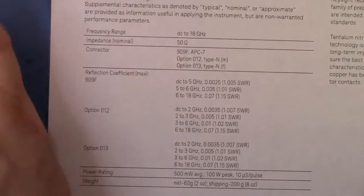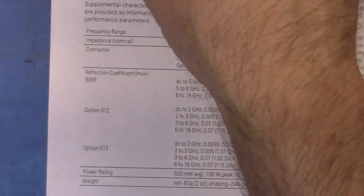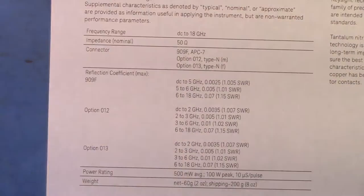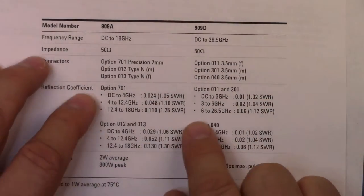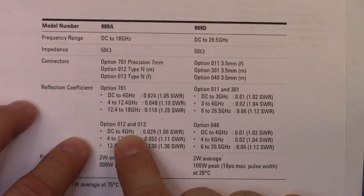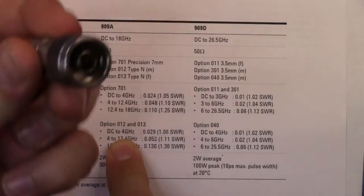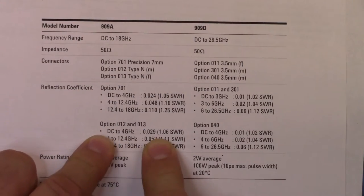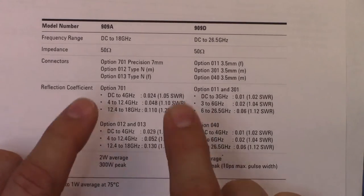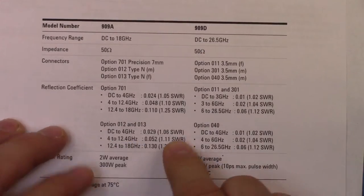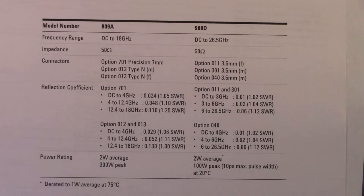When we look at the other loads, these 909As, on the 909A from DC to 4 gigahertz for option 12, because these are N-type, I should have an SWR of 1.06 or less. So from DC to 4 gigs, the impedance is going to be about 50 ohms.